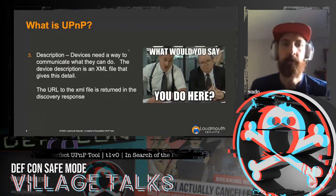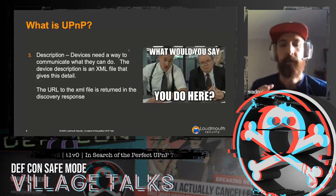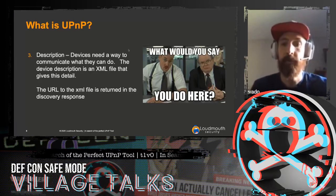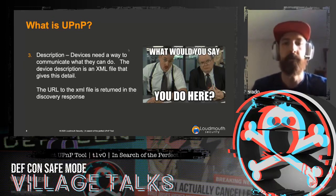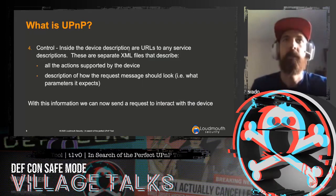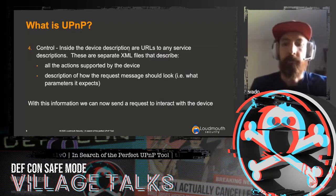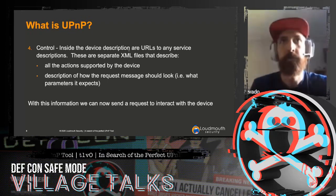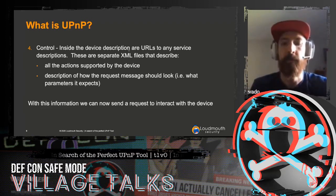Once you know what devices are on the network, you need to know what those devices can do. There's a device description XML file that gives this detail, and when devices broadcast their presence or another device searches for them, the URL to that XML file is part of the response. The next part is control — once you know what a device can do, you need to know what endpoint to send requests to and what parameters to include.